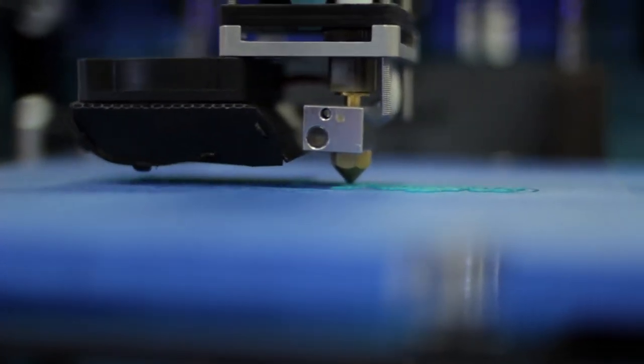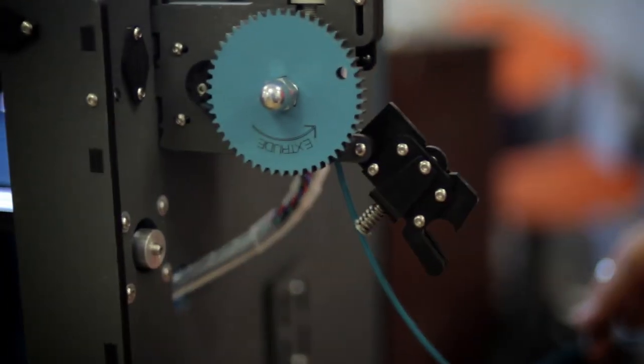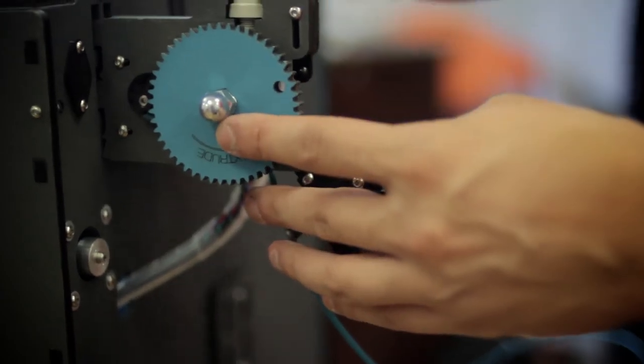3D printing is an additive technology. The opposite is called subtractive, where if you have a block of metal or a block of wood, you'll be cutting away at it to create the object. With this, you're actually adding layer upon layer.